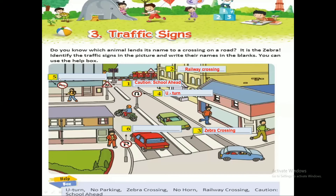Now question five — you can see a horn with a cross on it. We call it the no horn symbol, meaning here you are not allowed to honk your vehicle horn. Question six shows the letter P with a cross on it, which is the no parking symbol, meaning here you are not allowed to park your vehicle.